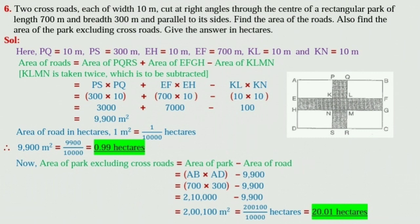Now, area of park excluding crossroads is equal to area of park minus area of road, is equal to AB into AD minus 9900, is equal to 700 into 300 minus 9900, is equal to 210,000 minus 9900, is equal to 200,100 meter square.